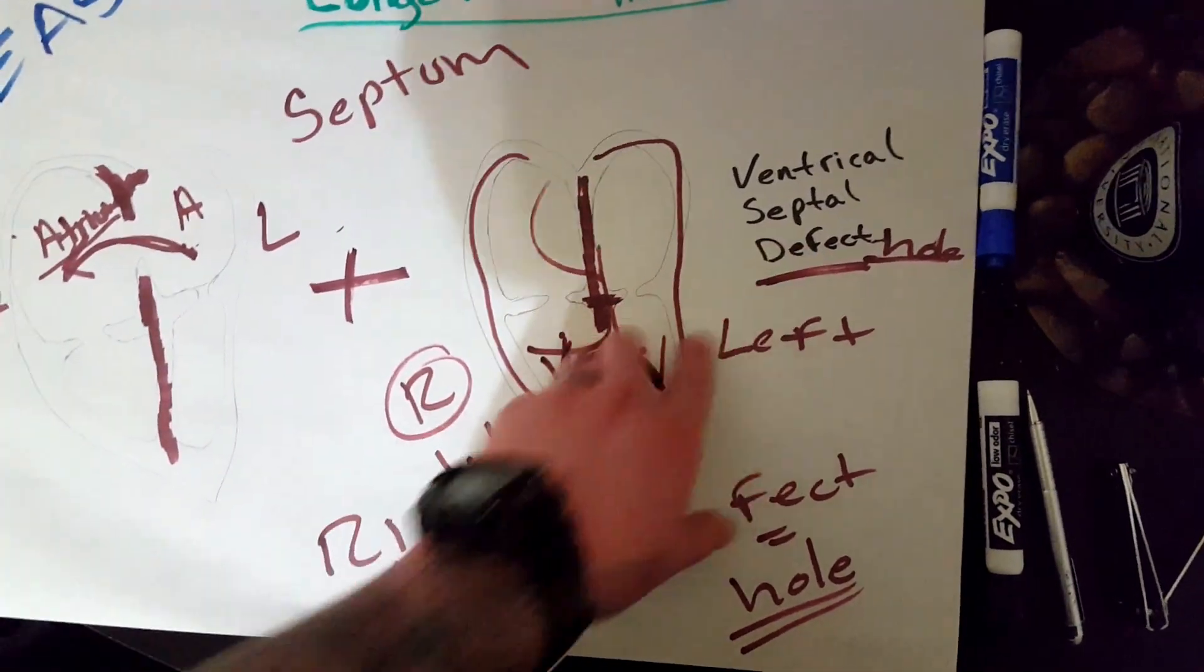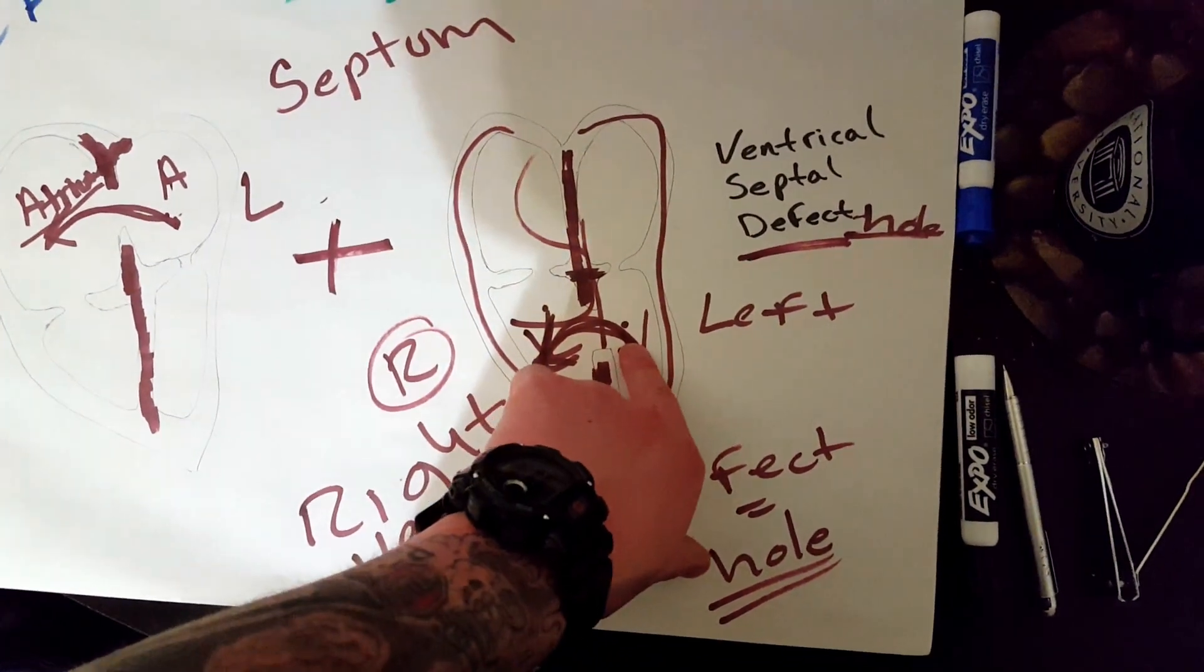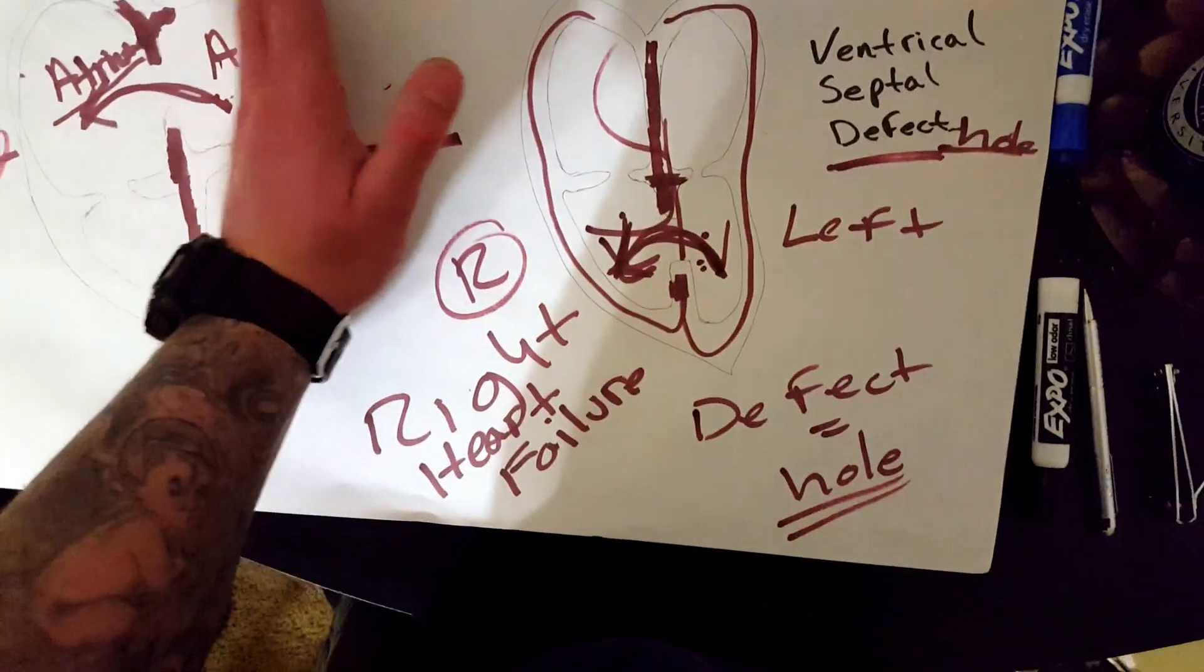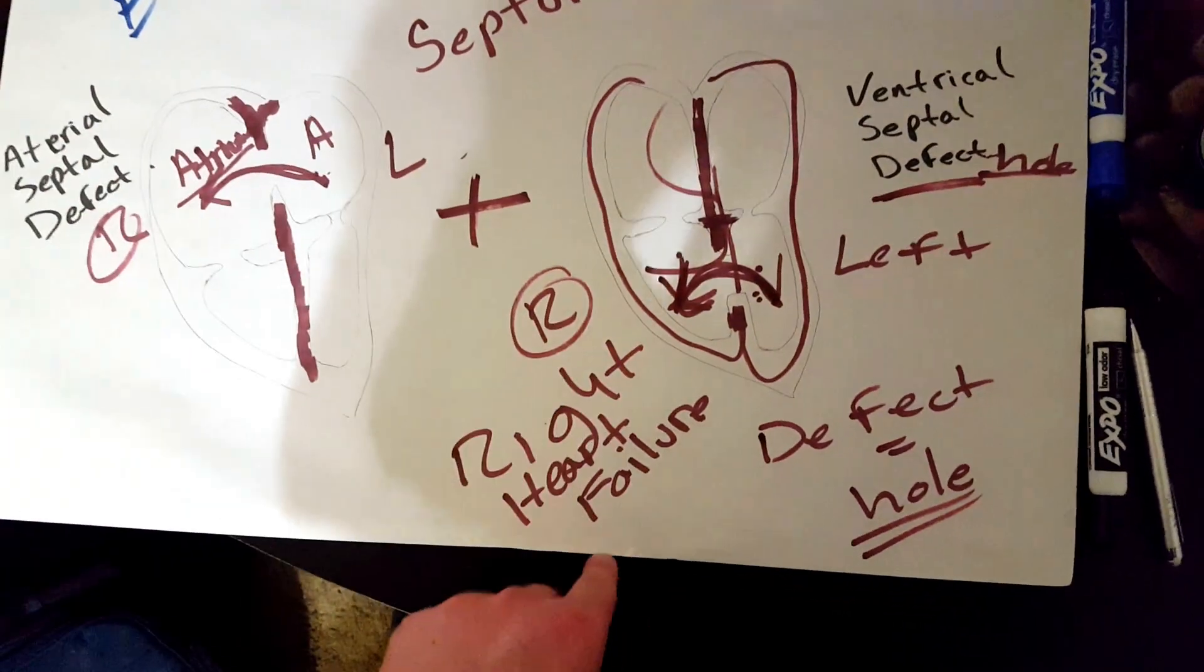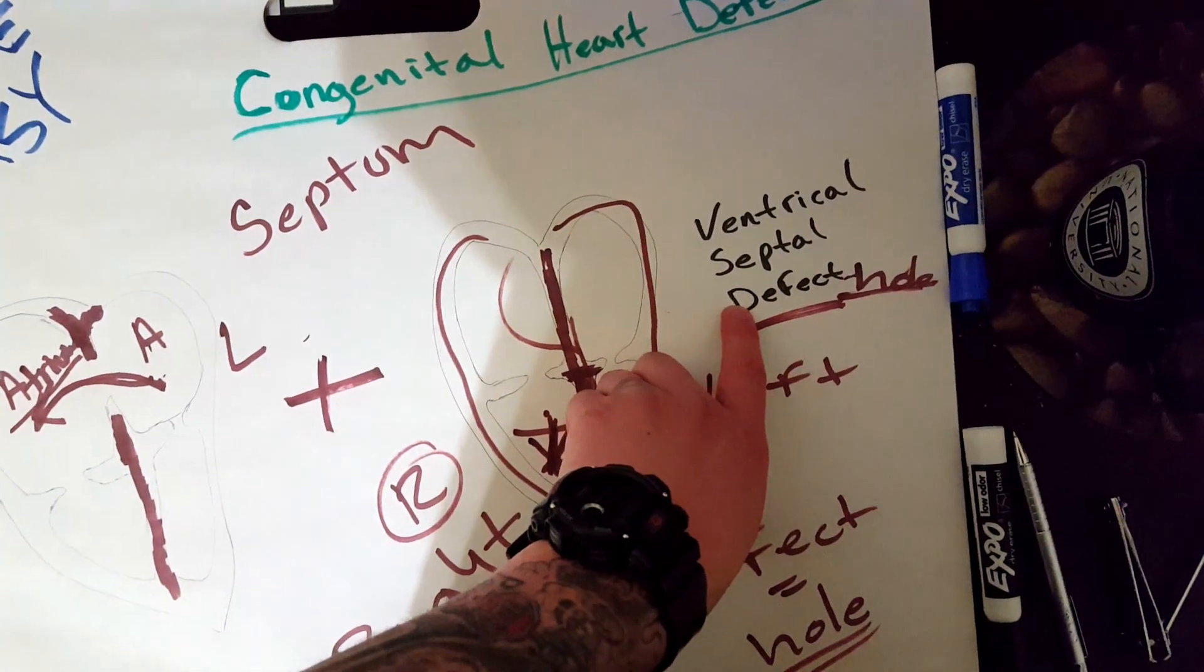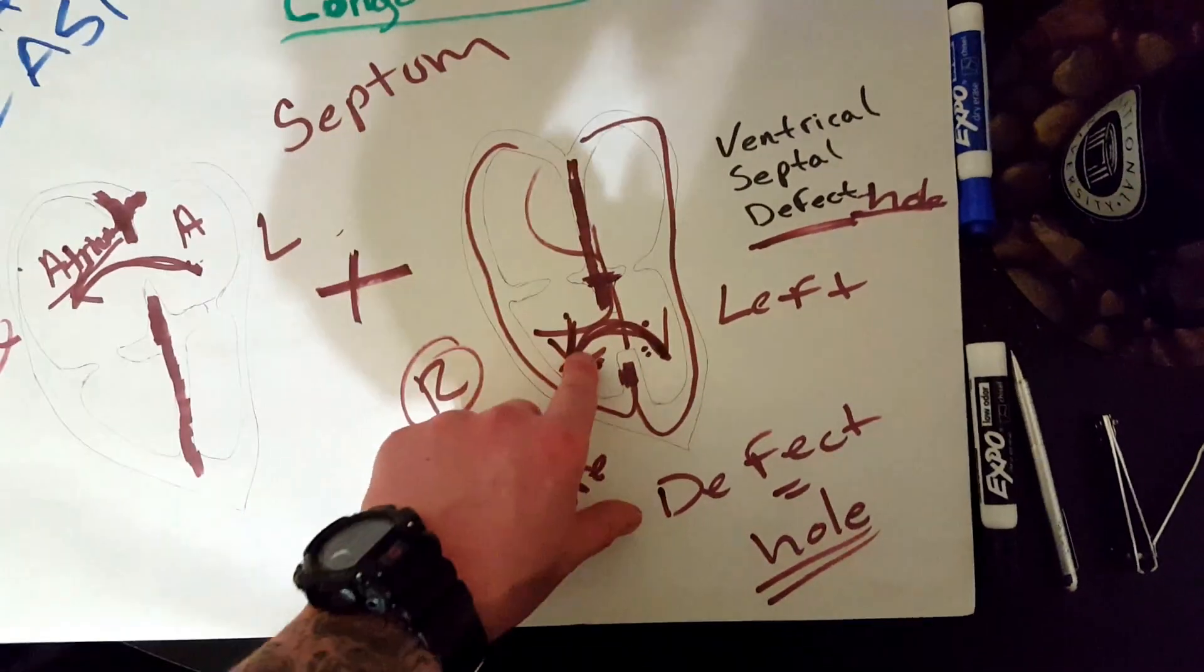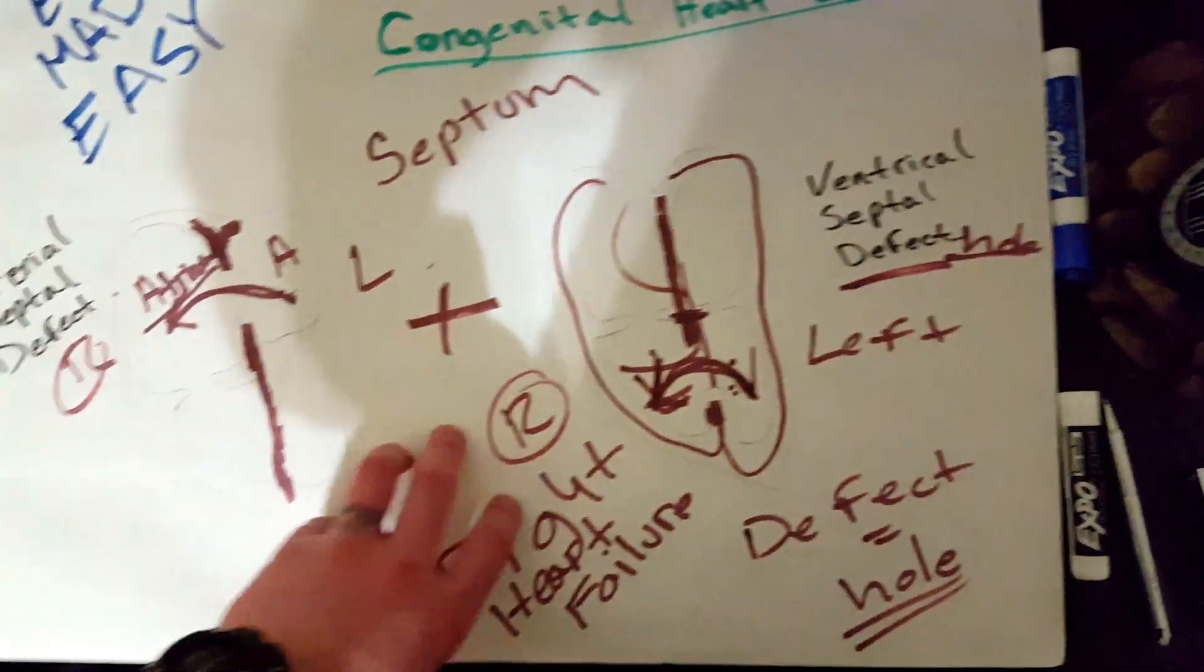Ventricular septal defect just means there's a hole between the two ventricles. That's all that means. And that means that blood will most likely go from the left side to the right side. Because there's always more pressure applied on the left side. And that's going to cause right heart failure. This one, by the way. Ventricular septal defect is the most common out of all of them. So, I'd write that down in your notes. Ventricular septal defect is the most common one.